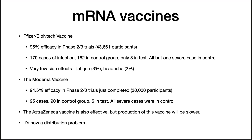The AstraZeneca vaccine has the advantage of being stored at refrigeration temperatures. The Johnson & Johnson vaccine was shown to be 85% effective at preventing severe disease. In all cases, these vaccines give greater than 99% protection against dying from COVID-19.